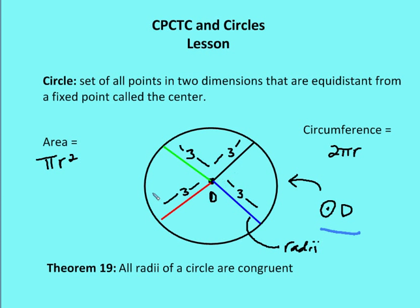Theorem 19: all radii of a circle are congruent. A couple of things you also want to know about a circle: the area of a circle is pi times the radius squared, and the circumference — which is the distance around the entire circle — is 2 times pi times the radius.